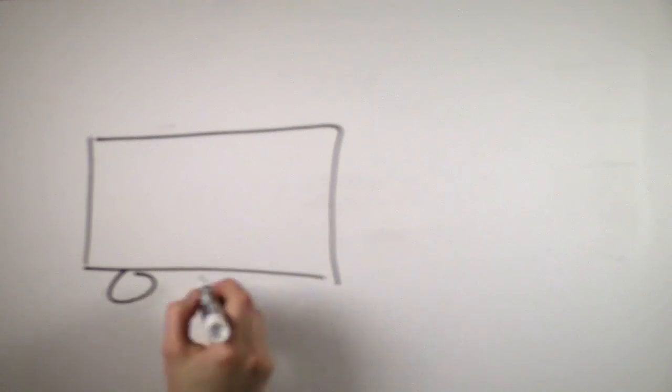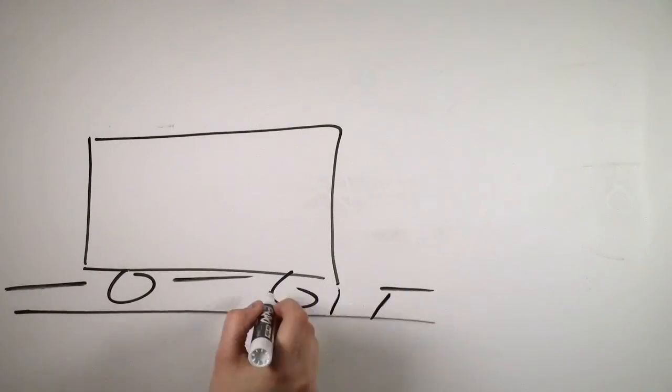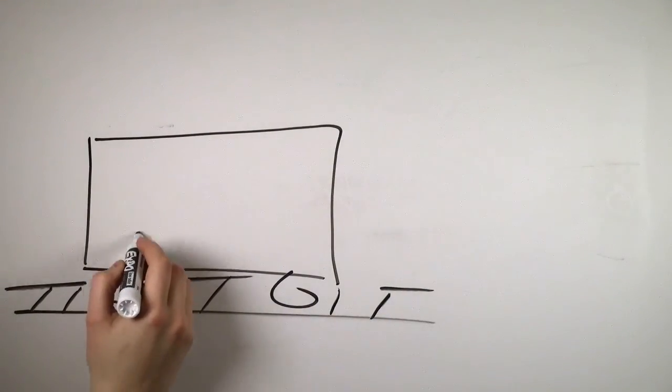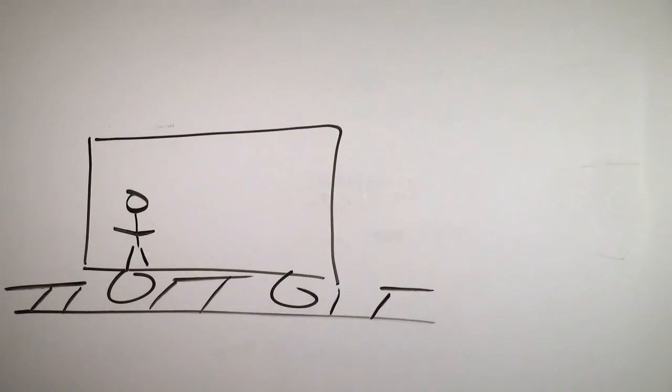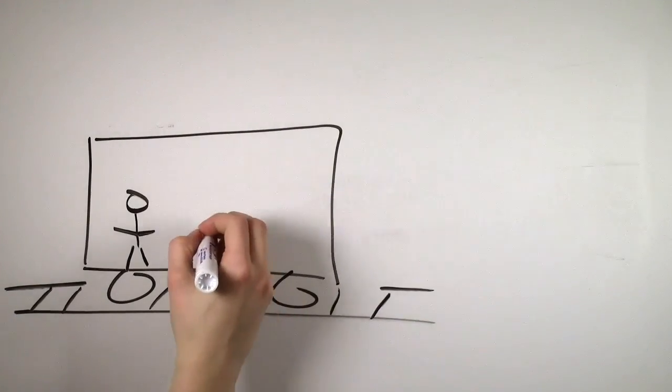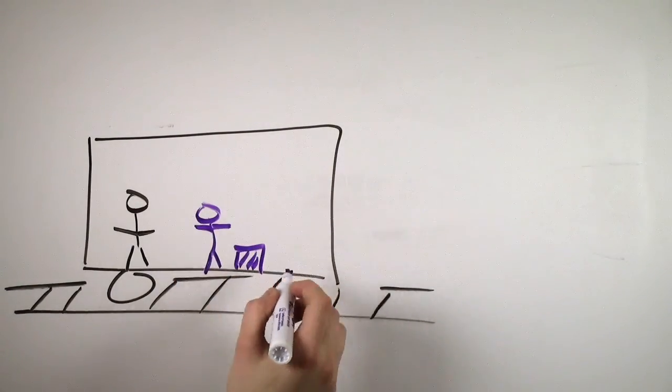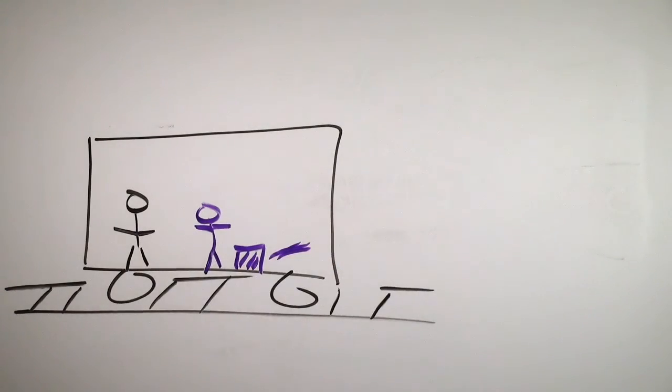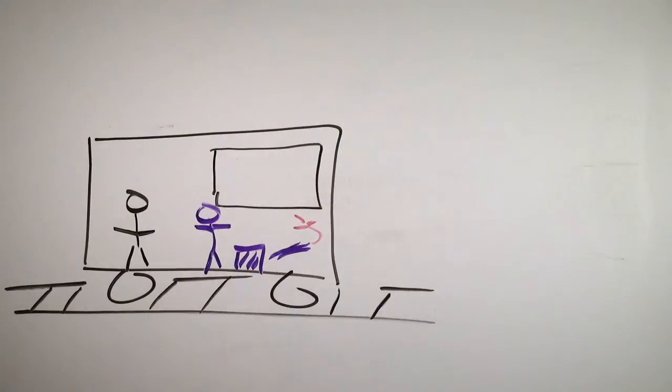There are a couple basic principles that we need to define before we dive into the paradox. First, we need to talk about reference frames. Imagine you are traveling at a constant velocity in a train without windows. To you, everything is at rest. Any other person, box, or stick of dynamite in that train car with you will appear to move around in a stationary space.